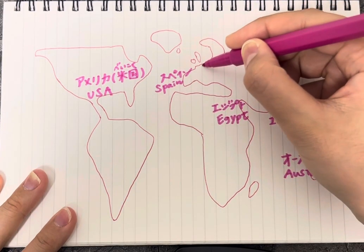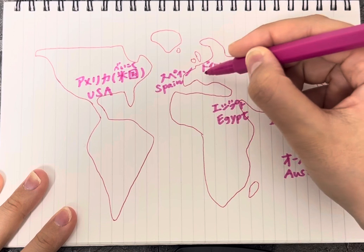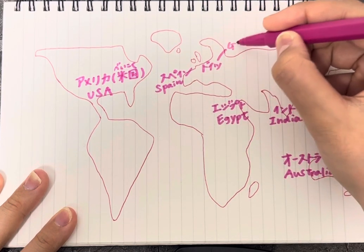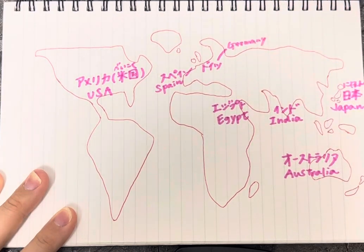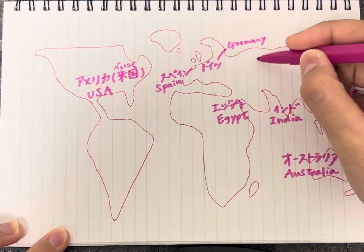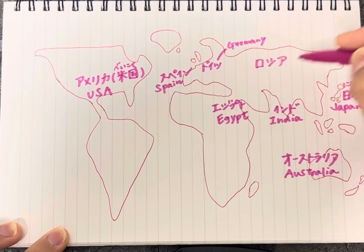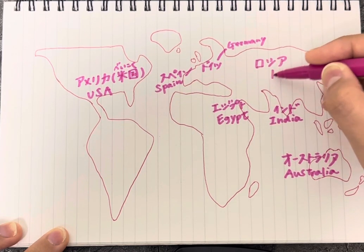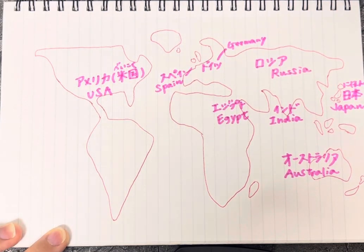Doitsu, which is Germany. And Roshia, which is Russia.